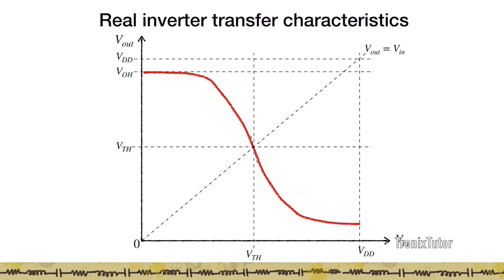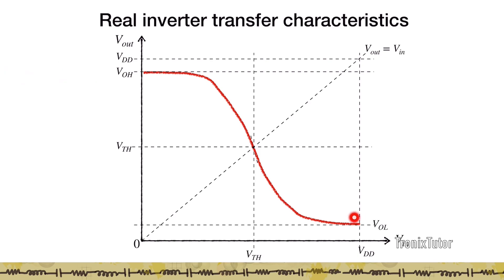When the input voltage is 0, the output voltage is not at Vdd but at some value close to Vdd. This is known as VOH, the maximum output voltage in the high condition. In the ideal case, we want VOH to be Vdd, and we'd like to create circuits whose VOH is as close to Vdd as possible. Similarly, at the other extreme, when I apply Vdd at the input, the output voltage does not fall to 0 but falls to some value VOL, close to 0. This is known as the output low voltage.